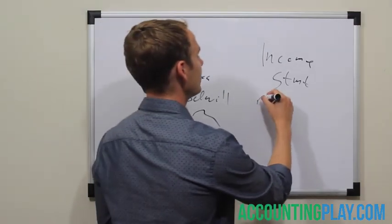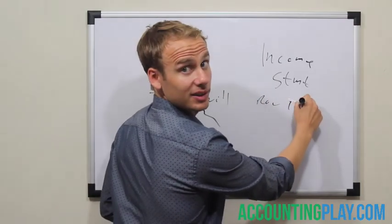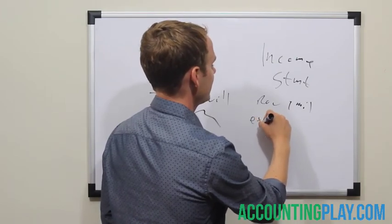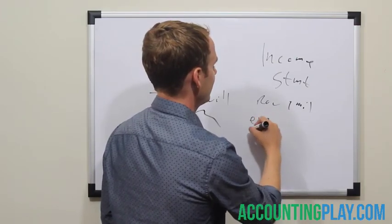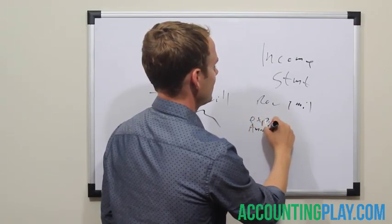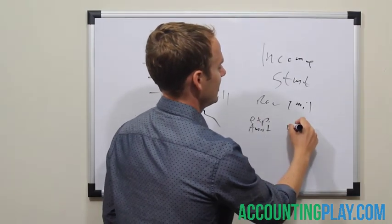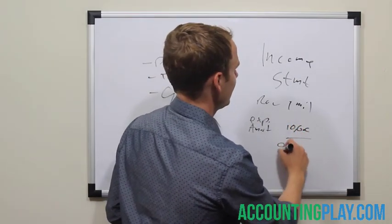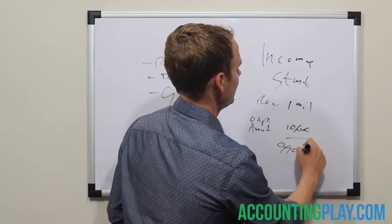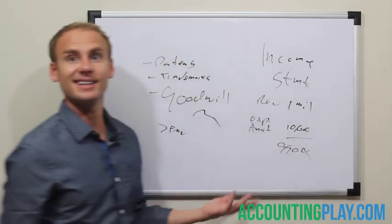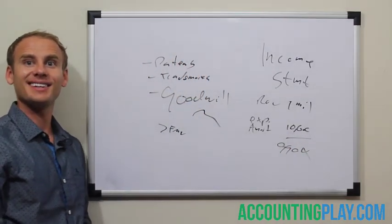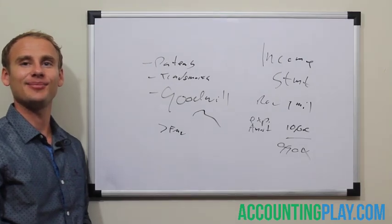So you might have revenue of $1 million, an expense of amortization of $10,000, and a profit of $990,000. This has been accountingplay.com. Thank you.